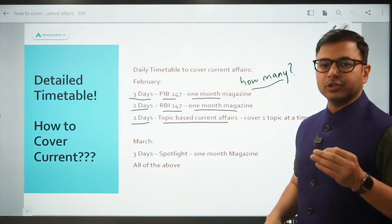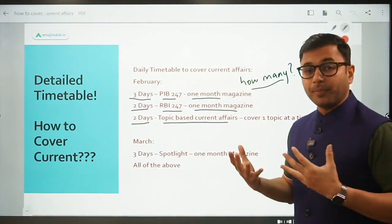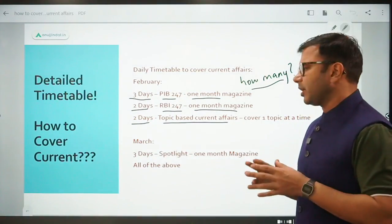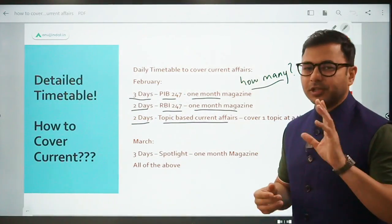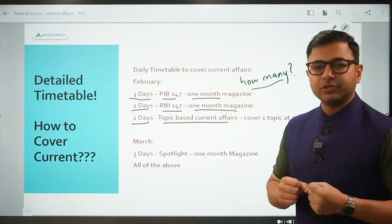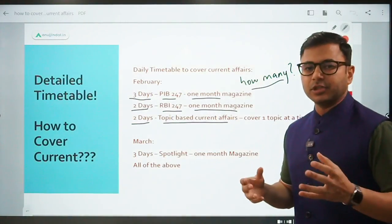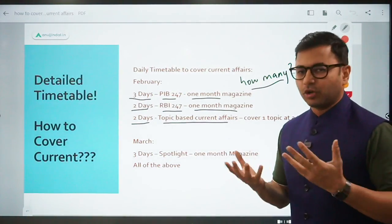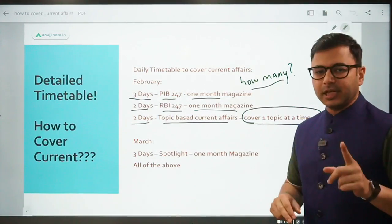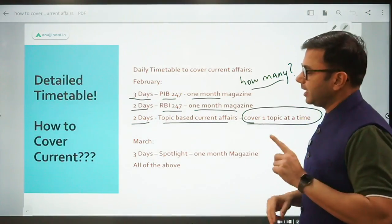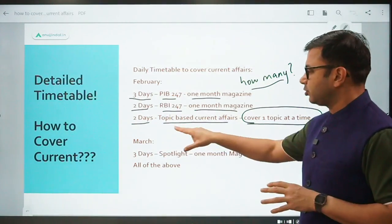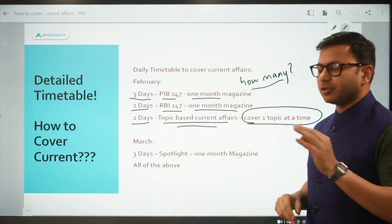This varies a lot because government schemes is a bigger topic which has 400 pages worth of content, requiring 8 to 10 days for one reading. Whereas if you're covering committees or economic survey budget, it probably takes about a day, not more than that. You have to cover one topic at a time - a maximum of 2 days on average to cover one topic under topic-based current affairs.